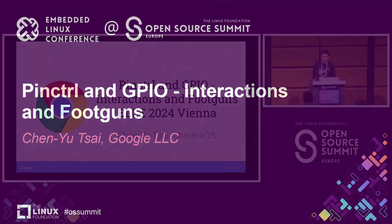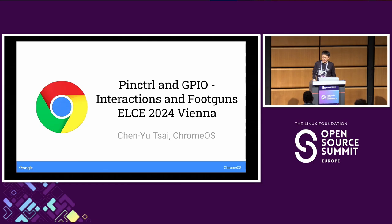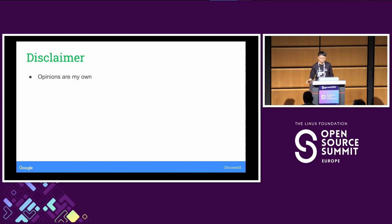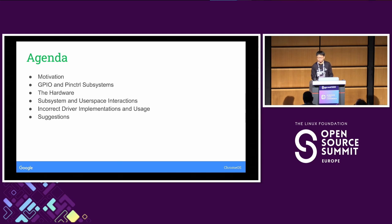Let's get started. Today we'll talk about pin control and GPIO, their interactions, and some of the foot guns that exist in the system. The opinions are my own observations. We'll talk about why I decided to give this talk, a quick intro into the GPIO and pin control subsystems, how the hardware is normally implemented, how the subsystems and user space interact, and where some drivers implement them incorrectly, along with some suggestions going forward.